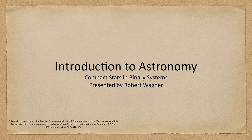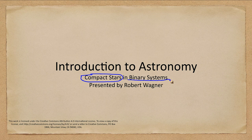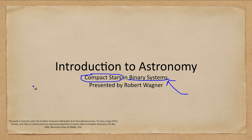Greetings and welcome to the introduction to astronomy. In today's lecture, we are going to talk about compact stars — things like white dwarfs and neutron stars, and what happens when they occur in a binary system. We've looked at white dwarfs and neutron stars separately, but some very interesting things happen when they are part of a companion system. So let's go ahead and get started.